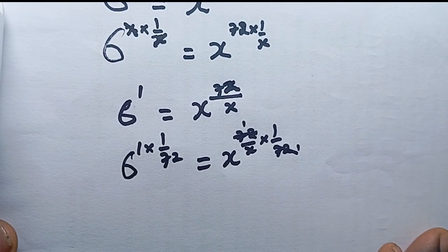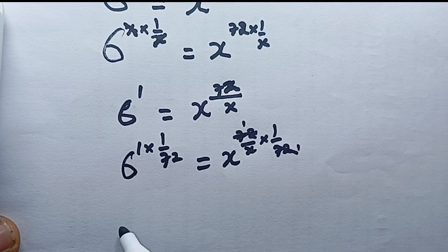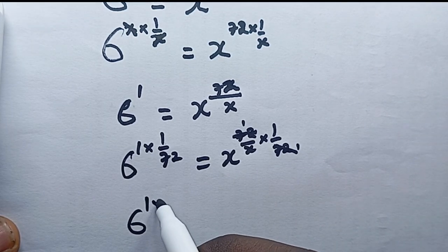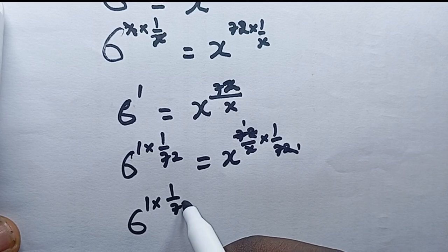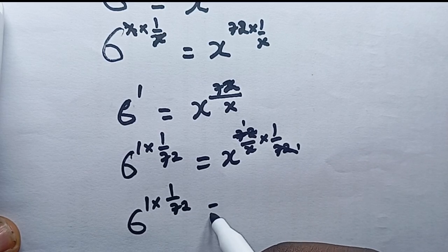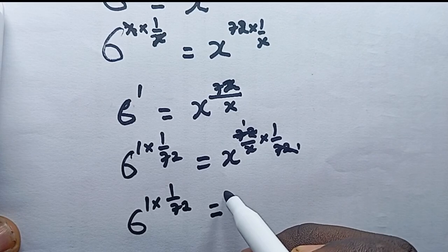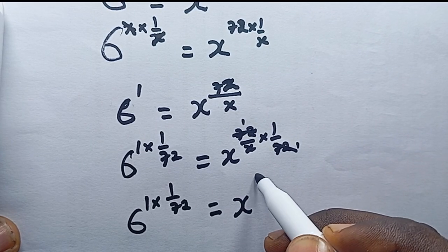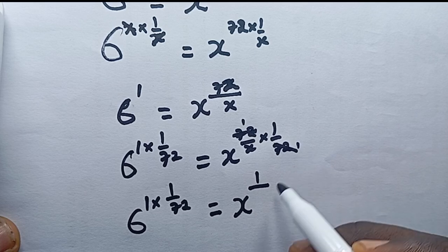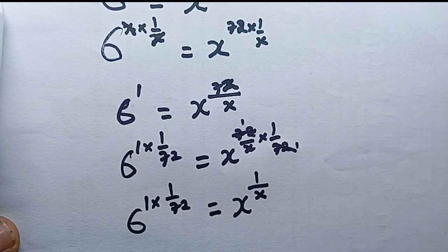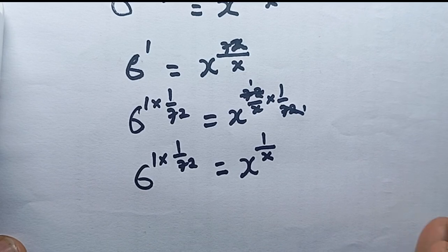So we have 1 over 72, and we now have 6 power 1 multiplied by 1 over 72 is equal to 1 divided by x times 1, which is x.